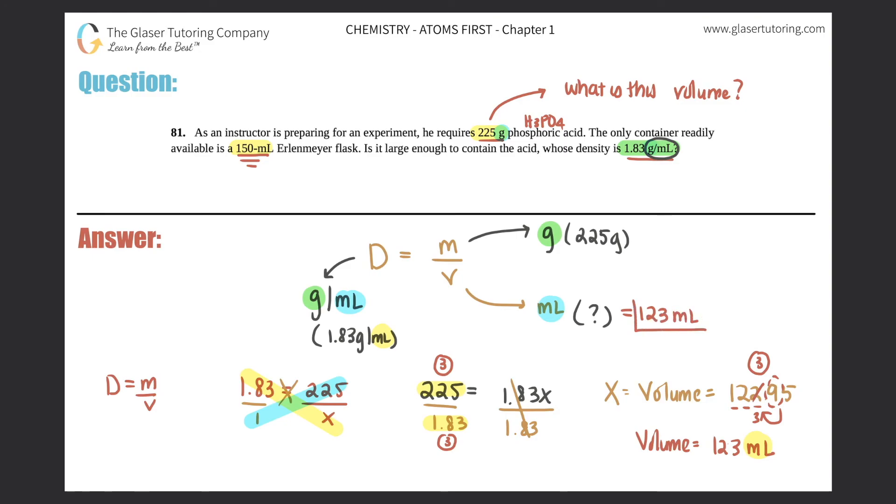So that's the amount of volume you need for a flask. The only container this instructor had was 150 mil. Is this large enough? Well, the volume is only 123 mils, so it is large enough because the volume required is smaller than the actual flask the instructor has.